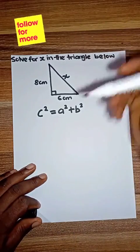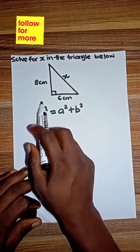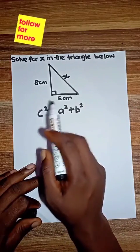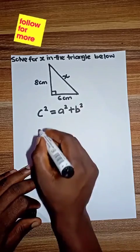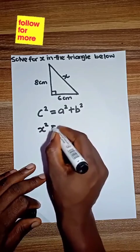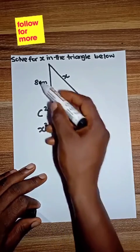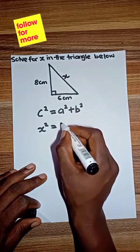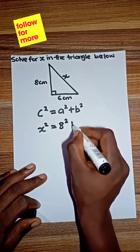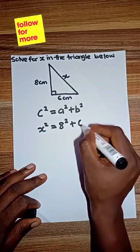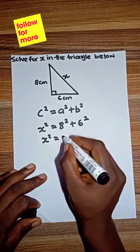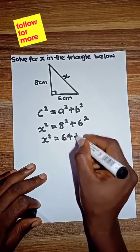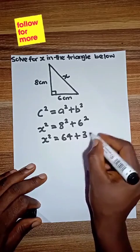So that means in this question we are looking for c. We are looking for the hypotenuse. So replacing c with x, we have x² = 8² + 6². So x² = 8² is 64, plus 6² is 36.